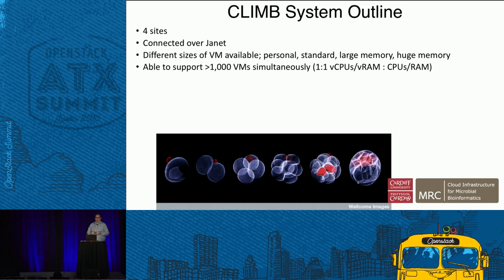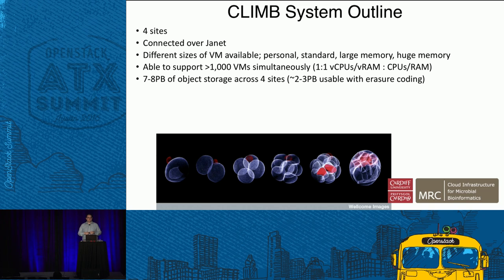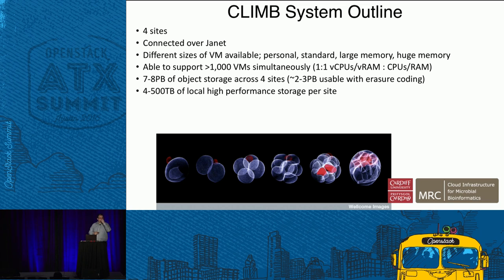Different sizes of virtual machines are available — different from standard OpenStack images in that they have a lot more memory than you would normally get. We're able to support over a thousand virtual machines simultaneously, limited by the number of external IP addresses we can get from the universities rather than any hardware constraint, and we're not doing oversubscription. We have about seven to eight petabytes of object storage across four sites, giving us two to three petabytes when using erasure coding and replication.